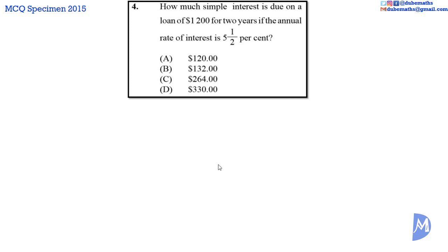Question 4. The definition of simple interest is: Simple interest I is equal to the principal P multiplied by the rate percent per annum R, multiplied by time in years T, all divided by 100.